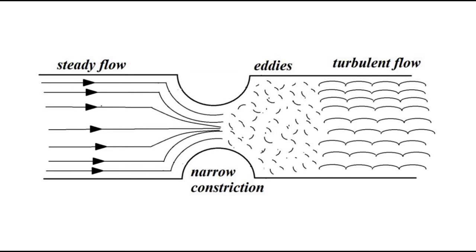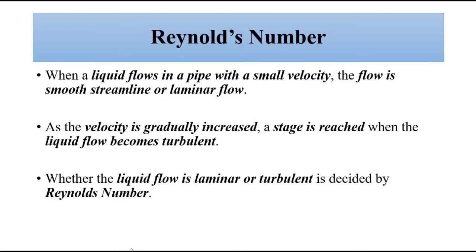The two important parameters which determine the nature of fluid flow are Reynolds number and critical velocity. Reynolds number decides whether the flow of liquid in a pipe is streamlined, laminar, or turbulent. When velocity is small, the flow is smooth and streamlined, but when velocity is gradually increased, a stage is reached where the liquid flow becomes turbulent. That threshold velocity is called critical velocity.